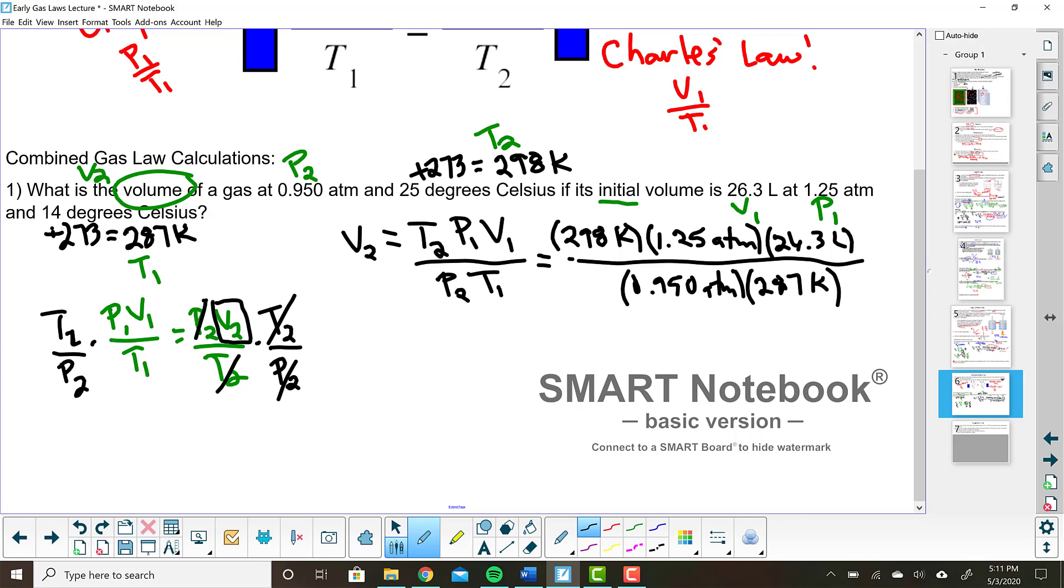And when we do that and use sig figs, we get an answer of 35.9 liters. Now, let's double check that these units are the units that I know I'm supposed to end up with. I was solving for volume, so it makes sense that I should get liters. The Kelvins both cancel out. And the atmospheres both cancel out, leaving me just with the liters, which trumps. And there you have it. This is the combined gas law. So this is the big culmination of the three previous gas laws that we've learned.